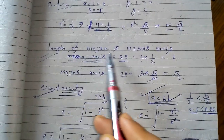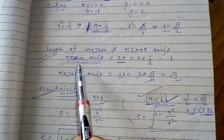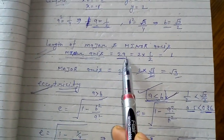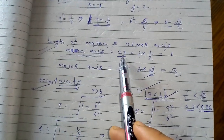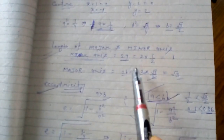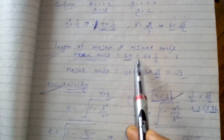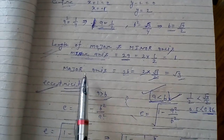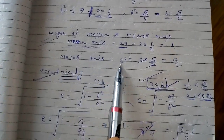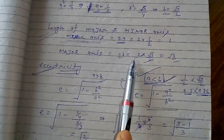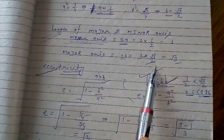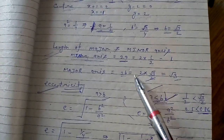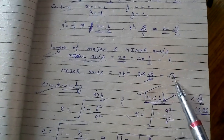We will find out the length of the major and minor axis. Minor axis equals 2a — this is the standard formula we apply for all kinds of ellipses. 2a equals 2 into 1 by 2, which equals 1. For the major axis, we apply the formula 2b equals 2 into root 3 by 2, and the 2s cancel giving us root 3.